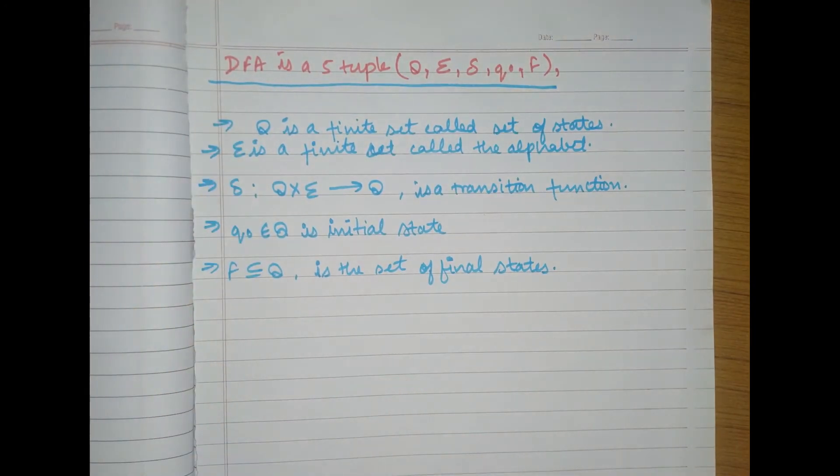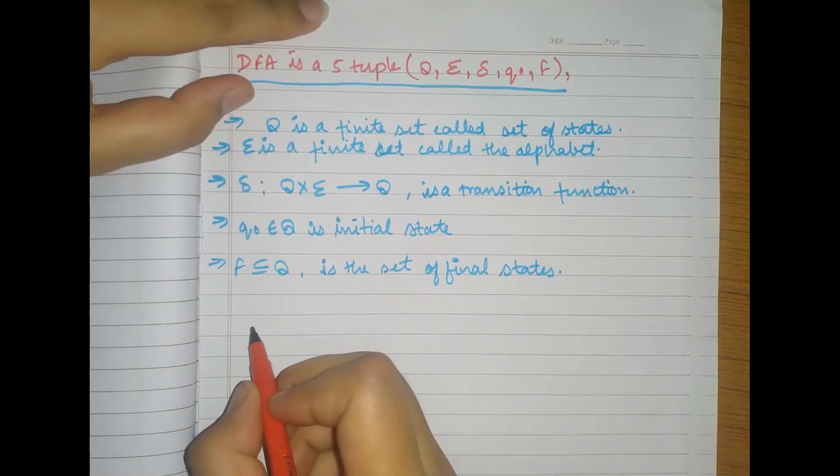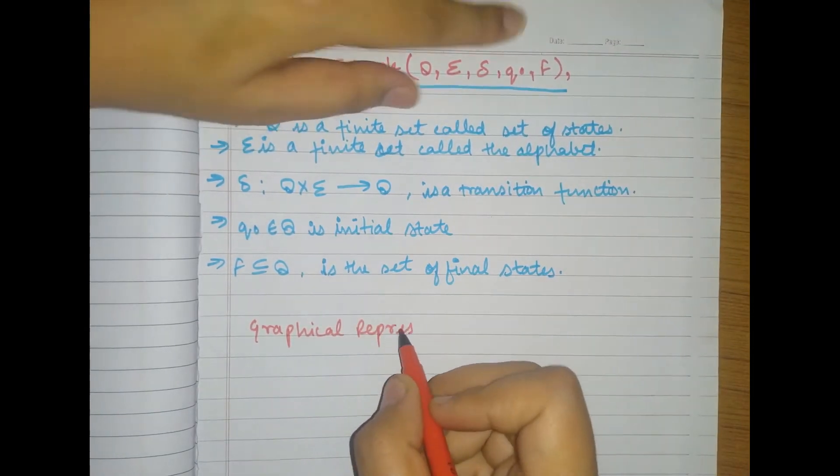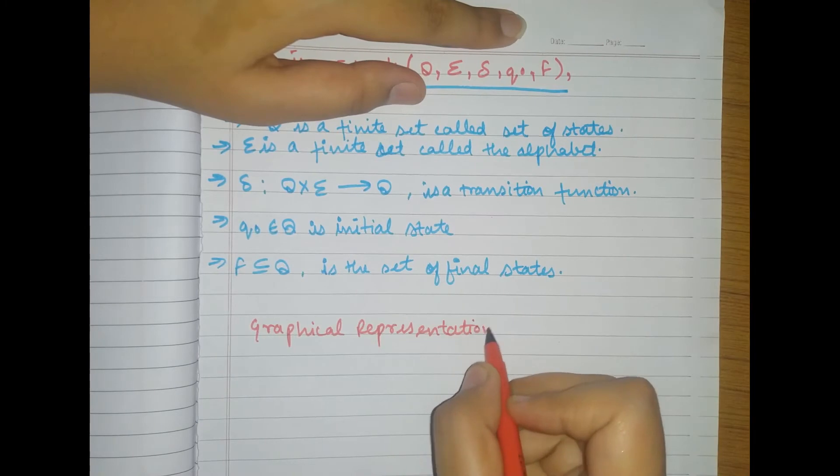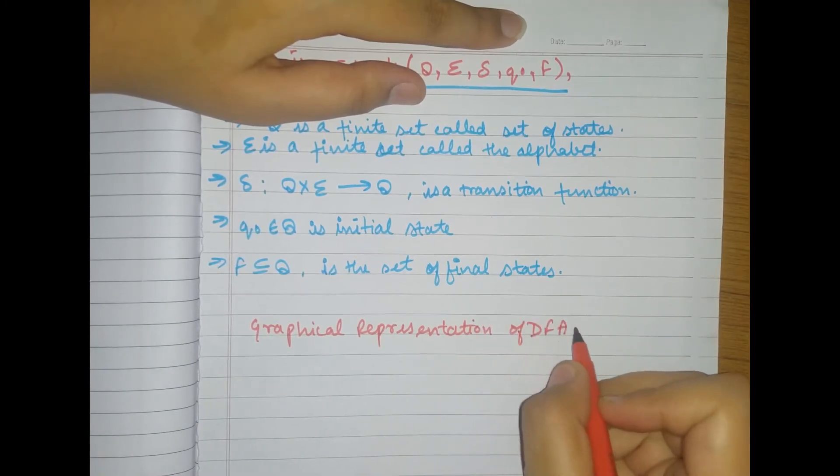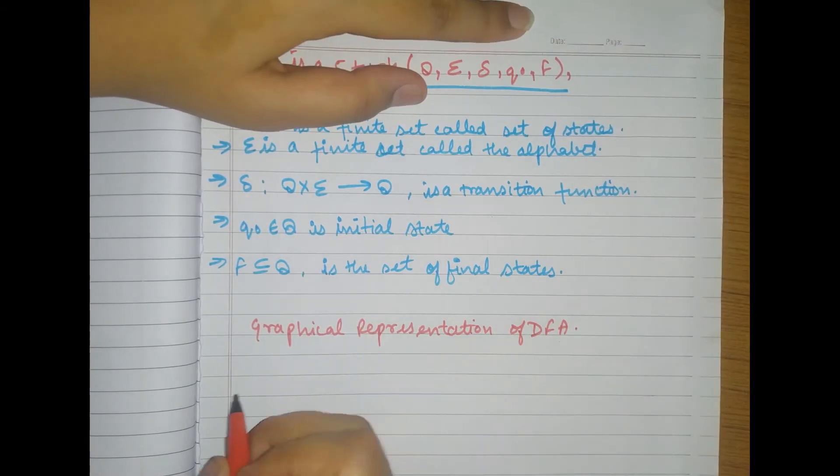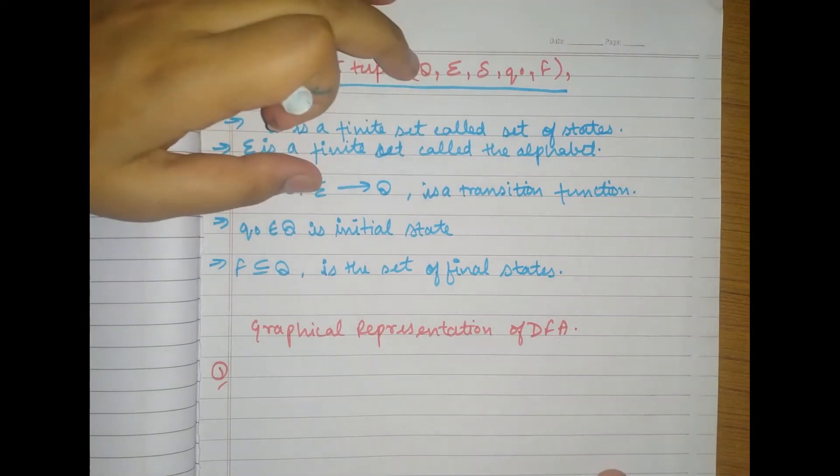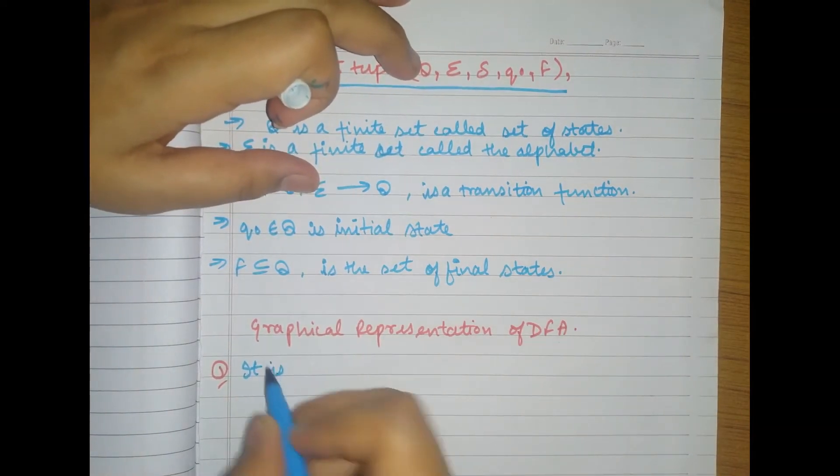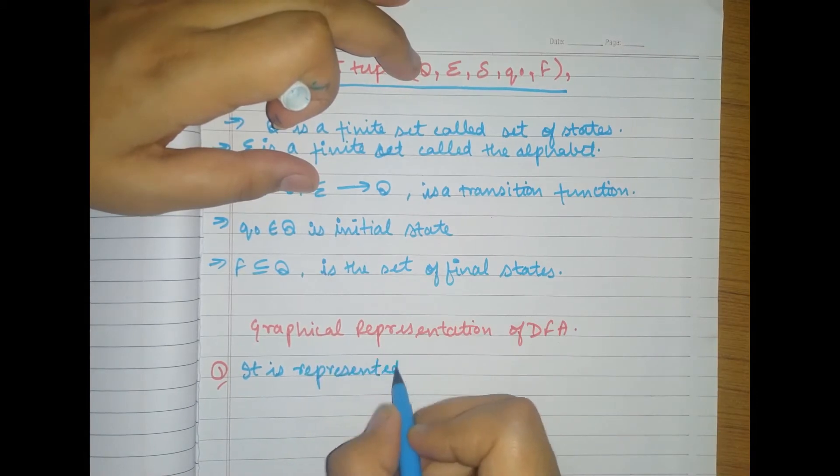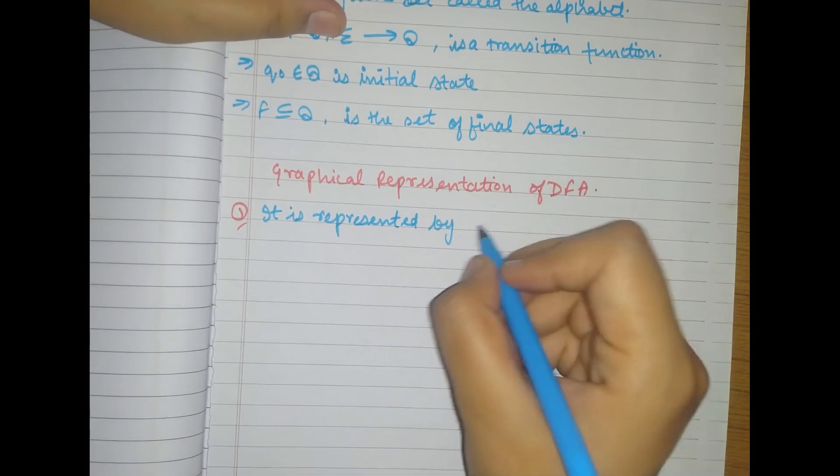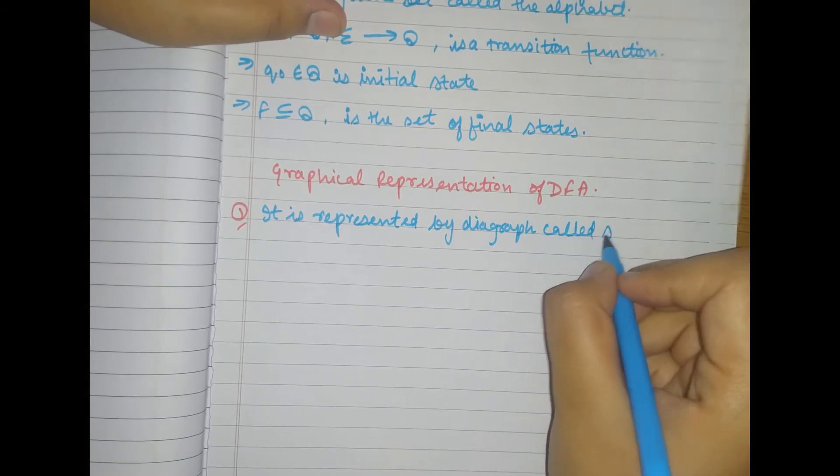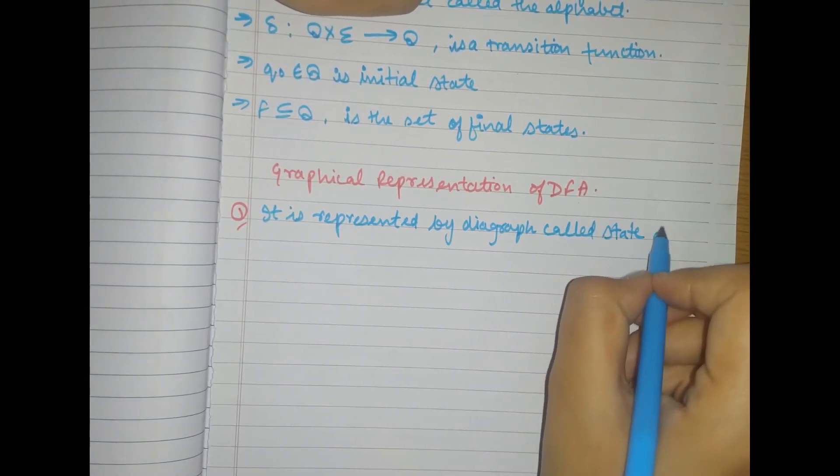So we can discuss some important points also here. These are graphical representation of DFA. So the first point is, it is represented by digraph called state diagram.